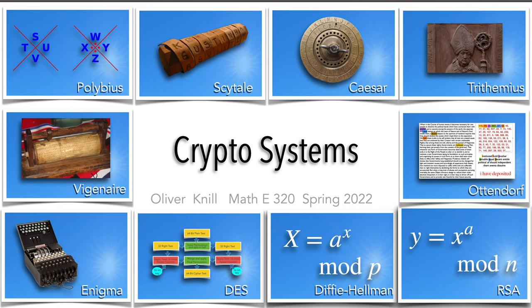Welcome. We discuss here a few cryptosystems. Cryptology is a branch of applied mathematics where the math is accessible. The security depends on basic mathematical principles and so produces trust. Nobody accepts security by obscurity.